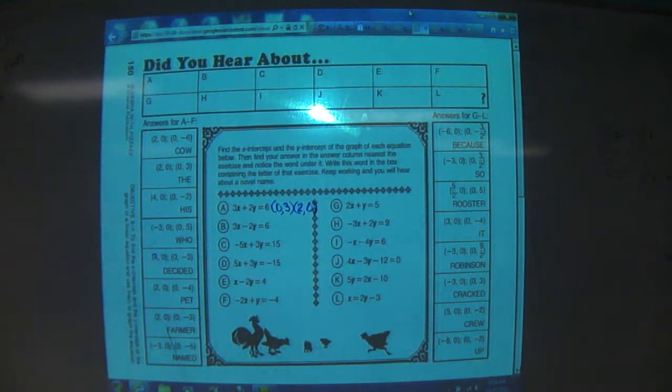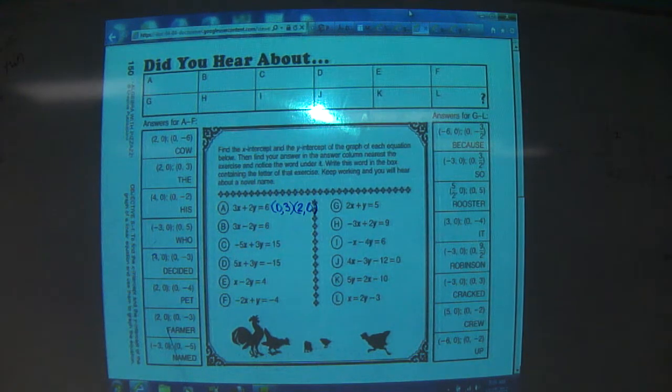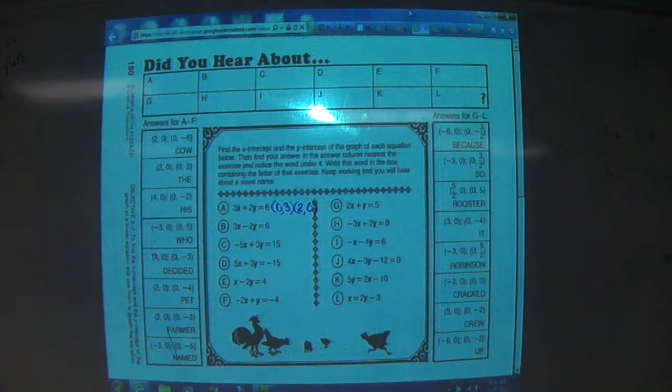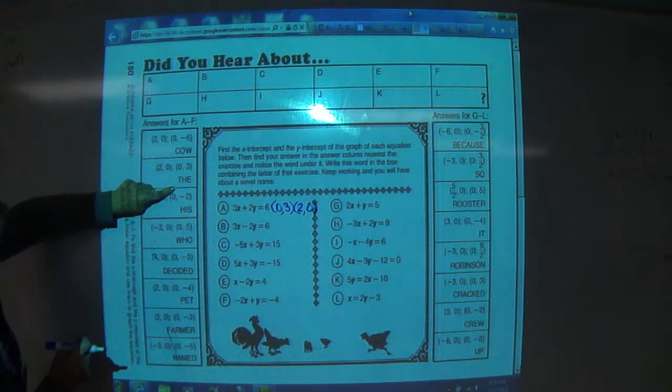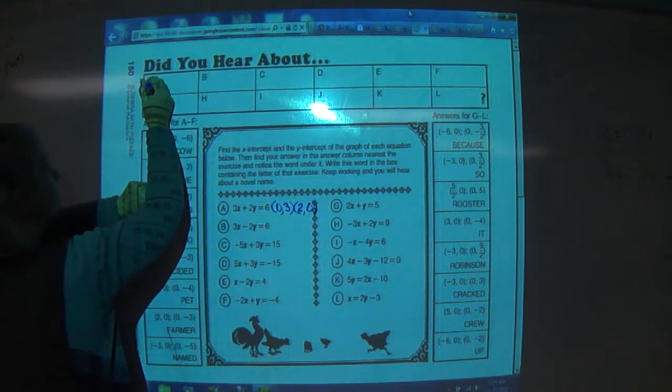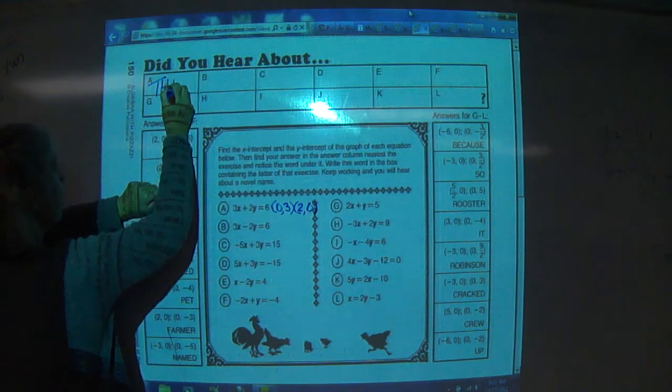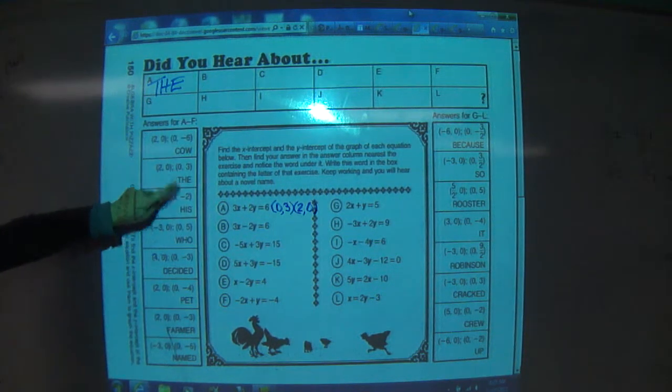You just found the x and the y-intercept, where they cross the x and y-axis. Here, we have 2, 0, 0, 3, so a is the word the. Look, you're halfway done with A.